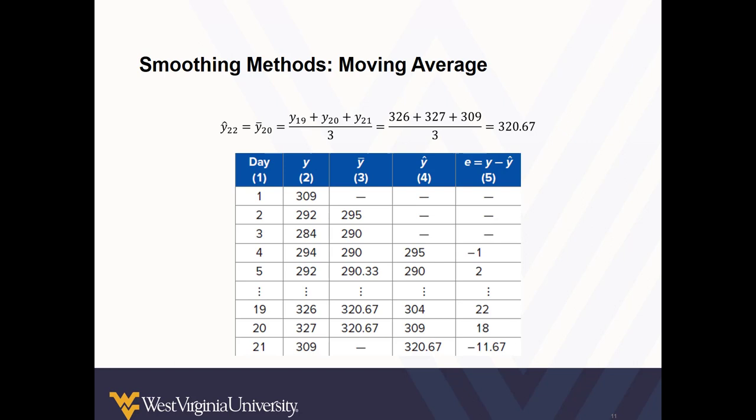So how about forecasting? Our data set includes calls over a 21 day period, but what about day 22? We can use the values we have to predict day 22. So we add together the values for days 19, 20, and 21, divide by three, and find an estimate for day 22, which is 320.67.